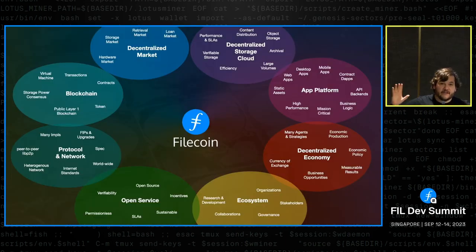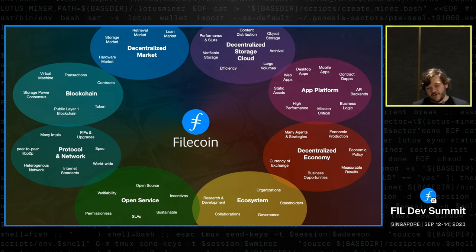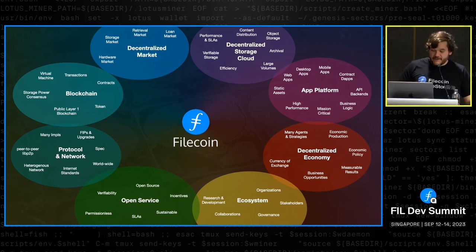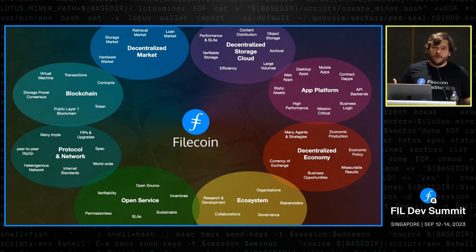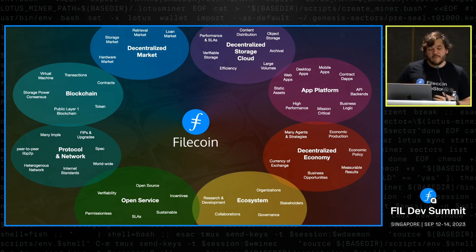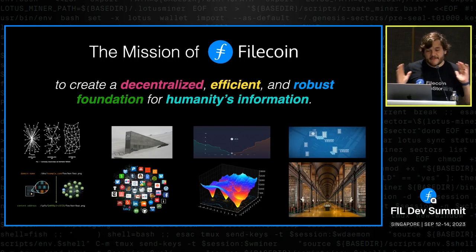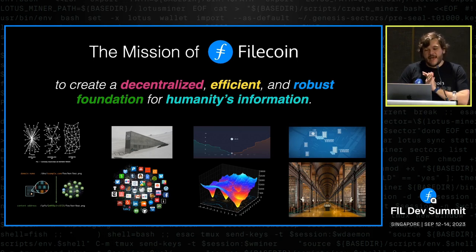The Filecoin protocol is a very large system with all kinds of components: a blockchain, a decentralized market, a decentralized storage cloud, an app platform, a decentralized economy, and a broader ecosystem. All of that gets pulled together into a large-scale open service mediated through protocols and networks. And this is the mission of Filecoin: to create a decentralized, efficient, and robust foundation for humanity's information.